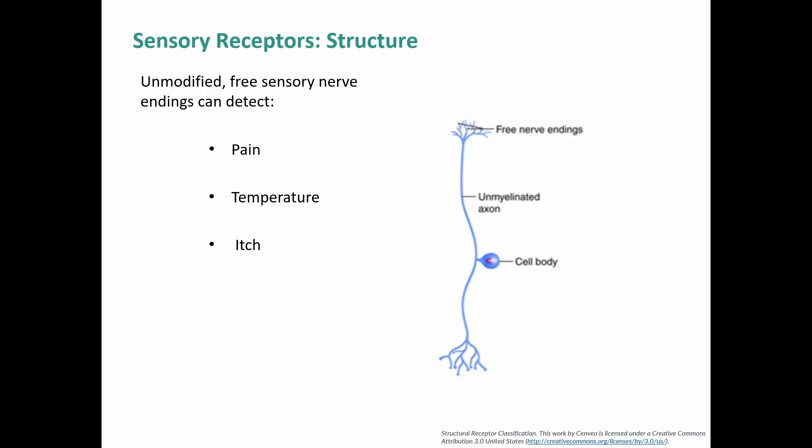The first type is the unmodified free sensory nerve ending. The dendrites are out in the open — nothing encapsulating them or covering them. We can use these to detect pain, if they are a nociceptor, or temperature, if they're a thermoreceptor. Temperature is not an absolute value but a comparison against the body's background temperature, so the baseline can be adjusted depending on the body's temperature. As temperature gets warmer by comparison, the action potential rate increases.